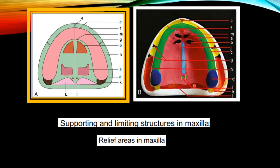The next topic is the relief areas. The relief areas are the mid-palatine suture, the incisive papilla, and tori palatine. Torus is not seen here because it is a pathology. So supporting structures, limiting structures, and relief areas have all been identified in this diagram — first a line diagram and second a model.